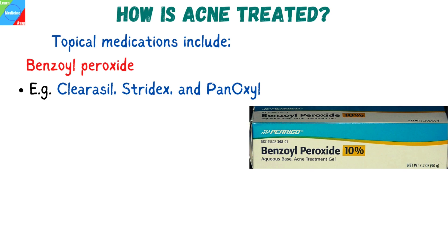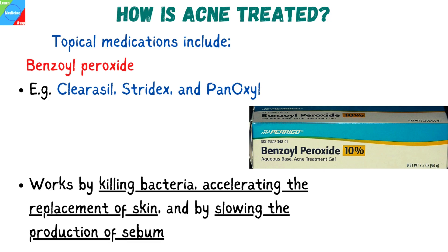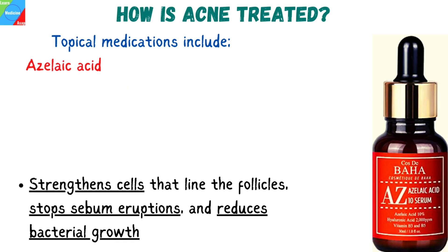Benzoyl peroxide is available as an over-the-counter medication. Examples are Clearasil, Stridex, and PanOxyl. They are available as leave-on gel or wash. It works by killing bacteria, accelerating the replacement of skin, and by slowing the production of sebum. Irritation and dryness are the most common side effects. Azelaic acid strengthens cells that line the follicles, stops sebum eruptions, and reduces bacterial growth.